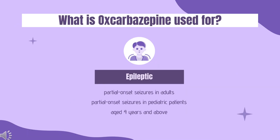In the United States, oxcarbazepine is indicated for use as monotherapy or adjunctive therapy in the treatment of partial-onset seizures in adults, and as monotherapy in pediatric patients aged 4 years and above, and as adjunctive therapy in pediatric patients aged 2 years and above with partial-onset seizures. In Canada, oxcarbazepine is indicated for use as monotherapy or adjunctive therapy in the treatment of partial-onset seizures in patients 6 years of age and older.